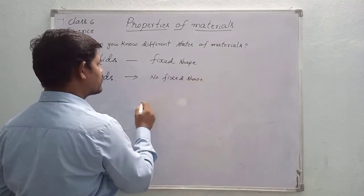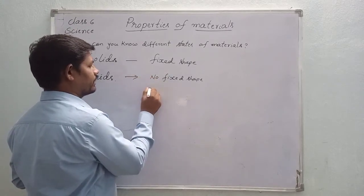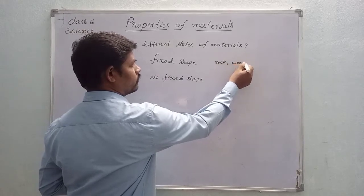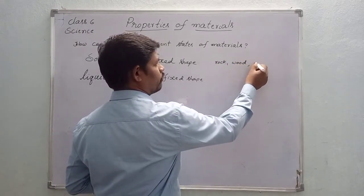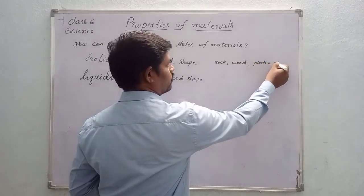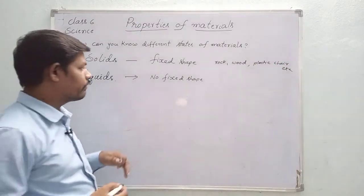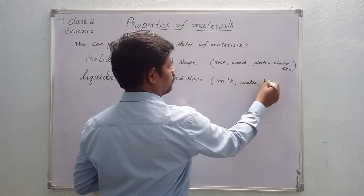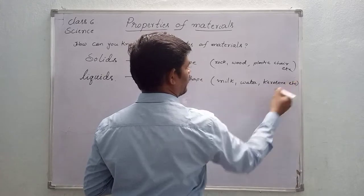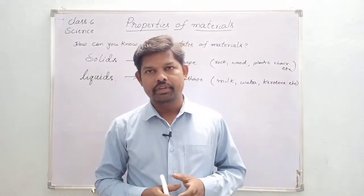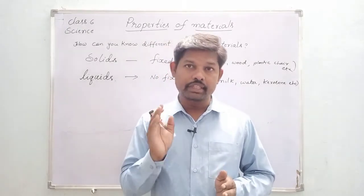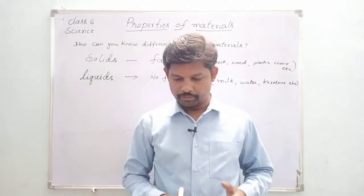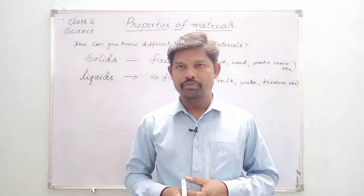Examples of solids include rock, wood, and a plastic chair. Examples of liquids include milk, water, and kerosene. You have Activity 4 — Table 4 — where you need to write the names of some solids, liquids, and gases in three columns using a pencil. While doing this experiment, observe that materials which get the shape of the container are liquids, and those that do not are solids.